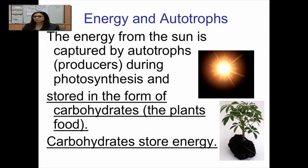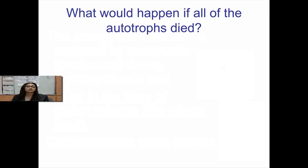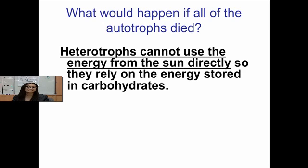There's a problem here: the energy coming from the sun is abiotic — it's non-living. Heterotrophs require energy from living things; that's where they get their energy. So in order to get this abiotic energy from the sun into living things, that's where autotrophs come in. Autotrophs take that energy from the sun and turn it into a form that heterotrophs can use — in this case, glucose. Plants capture the sun's energy in the form of a glucose molecule, and then heterotrophs can use that.